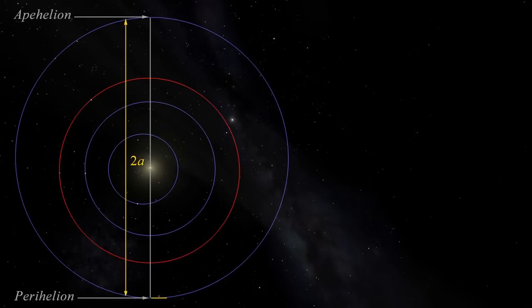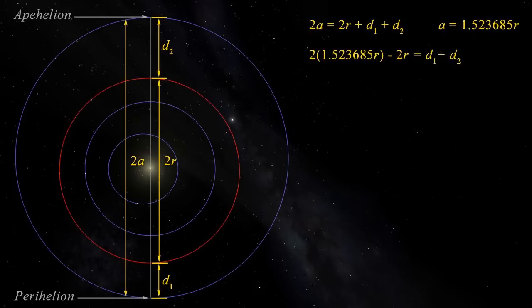Let's say Earth's orbit is a circle of radius r, where r is 1au, and the distance we're trying to find. The major axis of Mars orbit is 2a, and this is equal to 2r, plus the Earth-Mars distance when Mars is at perihelion, which we'll call d1, plus the Earth-Mars distance when it's at aphelion, which we'll call d2. We know what a is in terms of r, so we can substitute that in to get 2 times 1.523685 r minus 2r, equals d1 plus d2. Or 1.04737 r equals d1 plus d2.